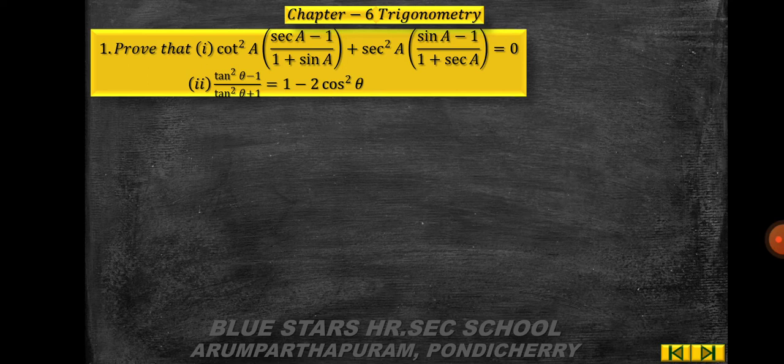Problem 1, first subdivision: prove that cot²a · (sec a − 1) / (1 + sin a) + sec²a · (sin a − 1) / (1 + sec a) = 0. Second subdivision: prove that (tan²θ − 1) / (tan²θ + 1) = 1 − 2cos²θ.